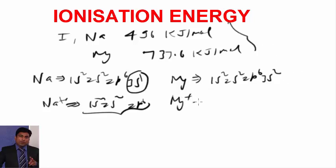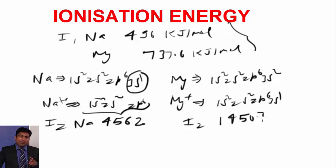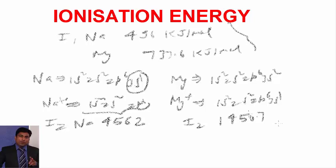The electronic configuration of Mg+ is 1s2 2s2 2p6 3s1. It will be easy to remove an electron from Mg+, so the second ionization energy of magnesium will be less than sodium. Checking the data: the second ionization energy of sodium is 4562 kJ/mol, while that of magnesium is 1450.7 kJ/mol.